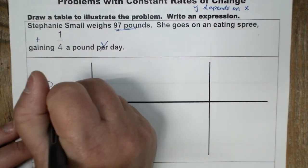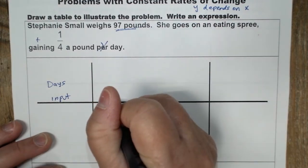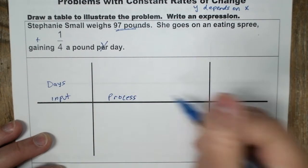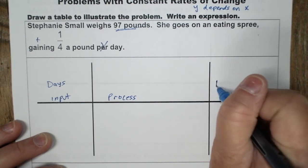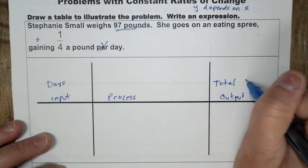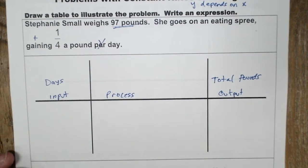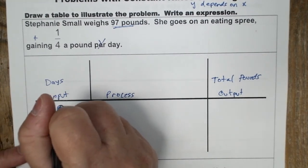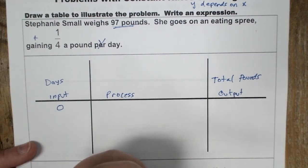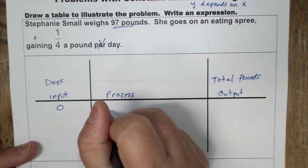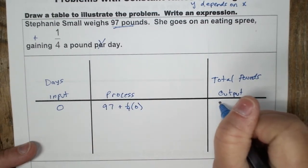I'm going to input days. That's going to be my input. I'm going to do something to that input, which is called process. And I'm going to get an output. And then this, it will be total pounds. So you usually start with zero, her initial starting point. So you have 97 plus one fourth times zero, and her output is 97.